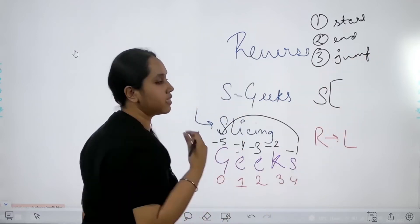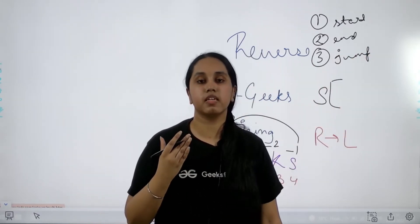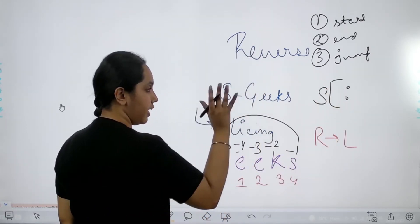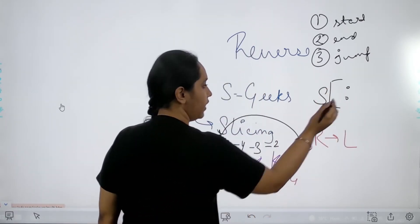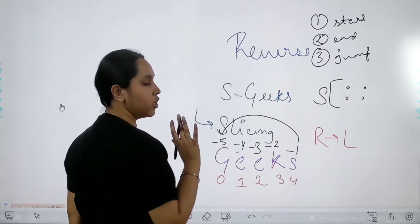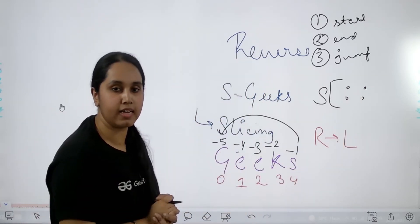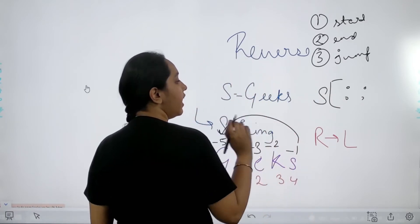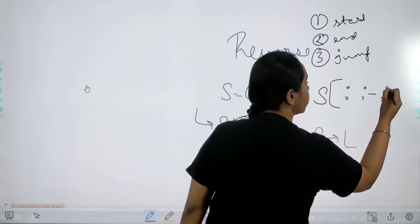Now if I am using slicing to print a string in the reverse order, I can just directly say that the start value would be the end, that is blank. Then again, the end value would be left again blank. I would just leave these values blank. And now for the jump value I would write minus 1.